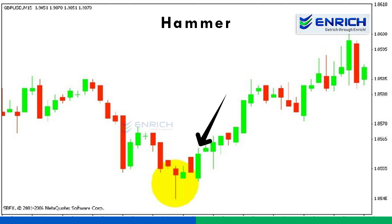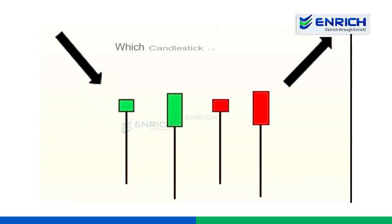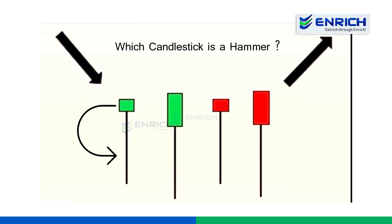Confirmation happens when the price trades above the high of the hammer candle. So which of these are hammer candlestick patterns? Remember, the size of the wick or the shadow must be at least two times longer than the body. As you can see, all the shadows are at least two times longer than the body, so all of these patterns are hammer patterns.